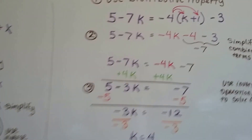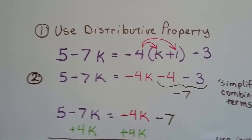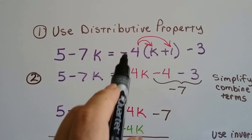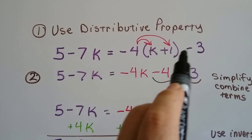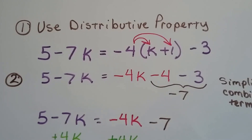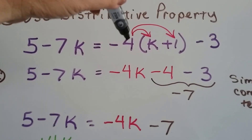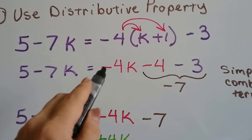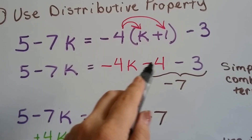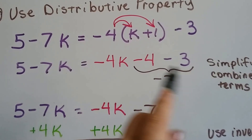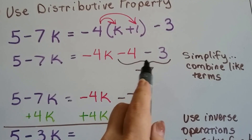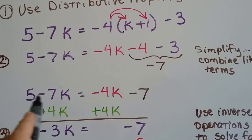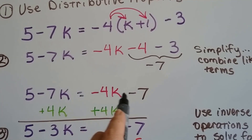Let's try it again. This time the distributive property is on the right side of the equation. We've got 5 minus 7k equals negative 4(k plus 1) minus 3. The first thing we do is distribute the negative 4 to the k and to the positive 1. That gives us negative 4k minus 4. Now we can simplify and combine like terms: negative 4 minus 3 is negative 7. So now our equation is 5 minus 7k equals negative 4k minus 7.